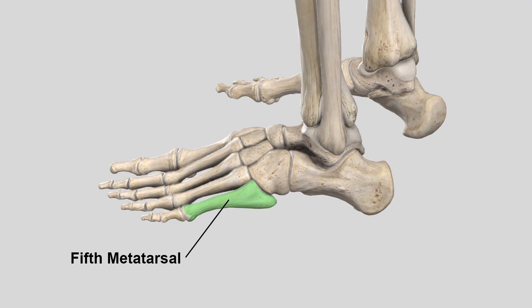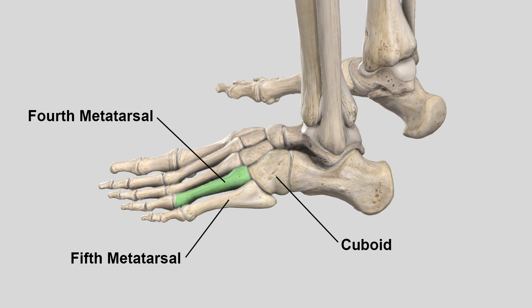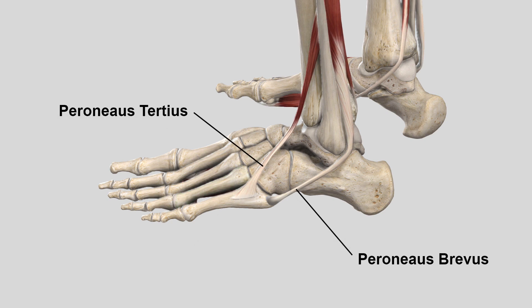The proximal 5th metatarsal articulates with the cuboid bone proximally and the base of the 4th metatarsal medially. The plantar fascia attaches to the plantar lateral aspect of the tuberosity, while the peroneus brevis and peroneus tertius attach to the dorsal surface of the tuberosity and metaphysis, respectively.